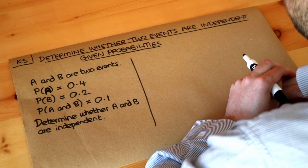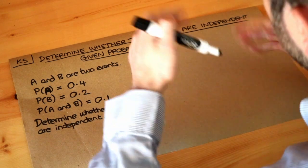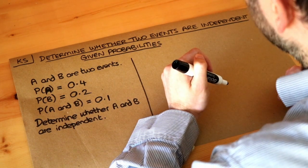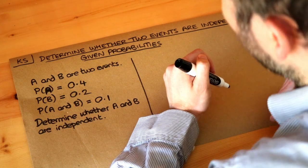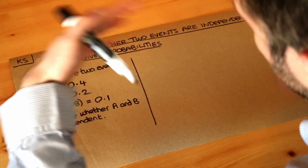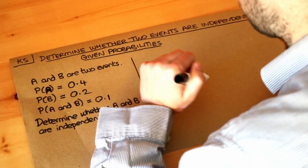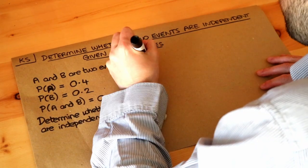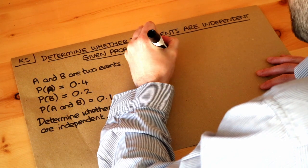In the previous video we saw that two events are independent if they don't affect each other. An event could be something like throwing an even number on a dice or tossing a coin and getting a heads. Those events are outcomes that you might get.